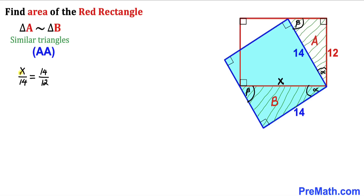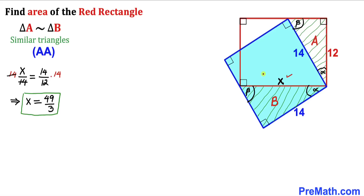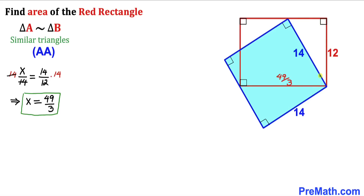Now let's solve for x. We remove the fraction by multiplying both sides by 14. The 14s cancel on the left, giving us x = (14 × 14) / 12. Simplifying, x = 196/12 = 49/3 cm. So the side length of the red rectangle is 49/3 cm.